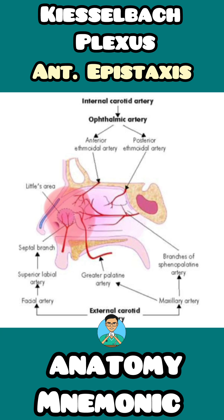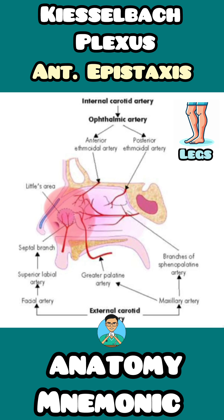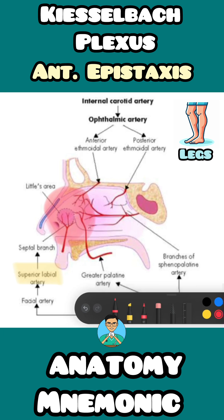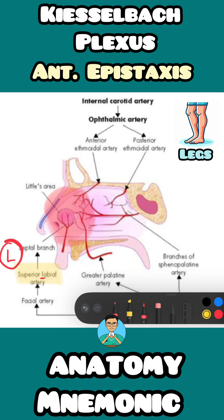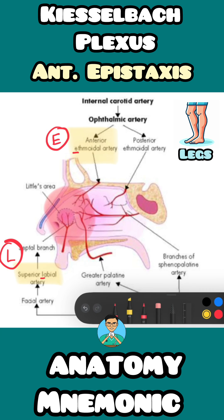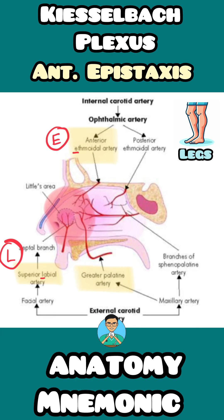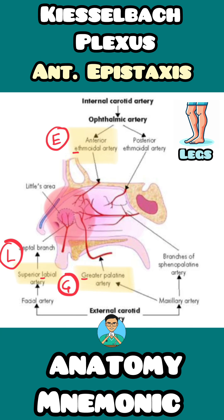The arteries that form the Kisselbach's plexus in the littles area can be remembered by a simple mnemonic: LEGS. L stands for the superior labial artery. E stands for the anterior ethmoidal artery. G represents the greater palatine artery, and S represents the sphenopalatine artery.